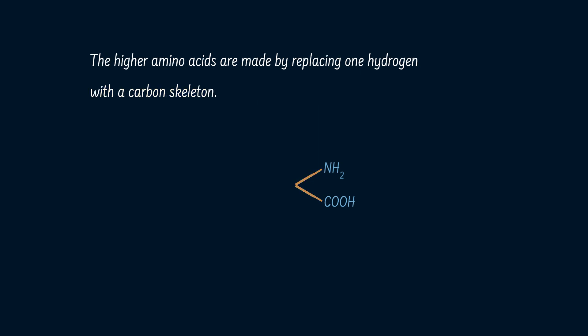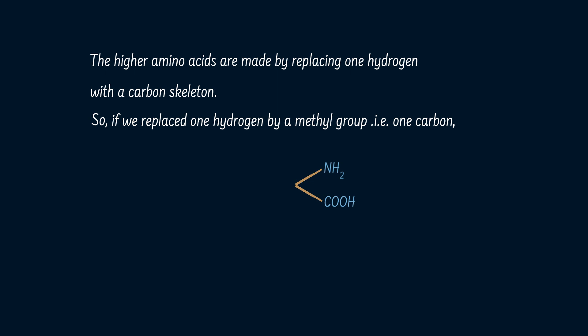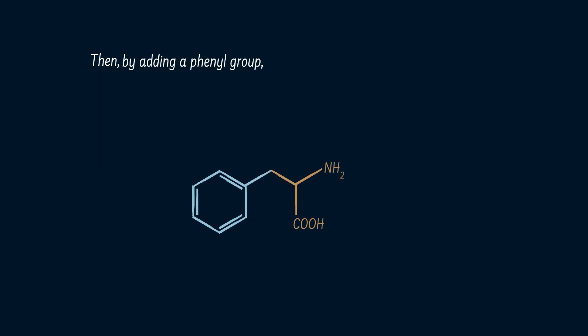The higher amino acids are made by replacing one hydrogen with a carbon skeleton. So, if we replace one hydrogen with a methyl group, we get alanine. Then, by adding a phenyl group, we get phenylalanine — the hero of our story. Let us abbreviate it to P.A.